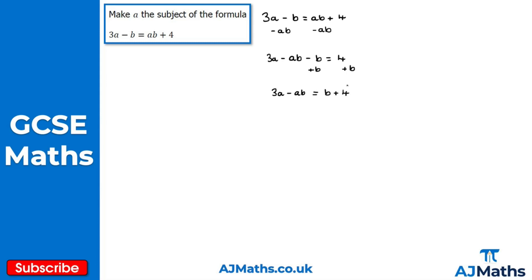From here we factor the a out on the left hand side, giving a(3 - b) = b + 4. Finally, to make a the subject, we divide both sides by (3 - b), so a = (b + 4) / (3 - b). That's the solution to question one.